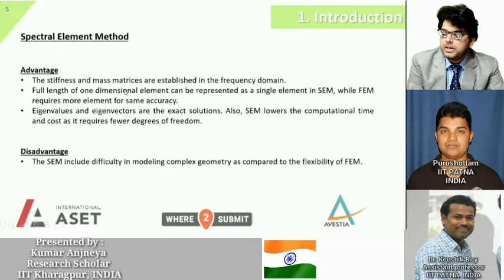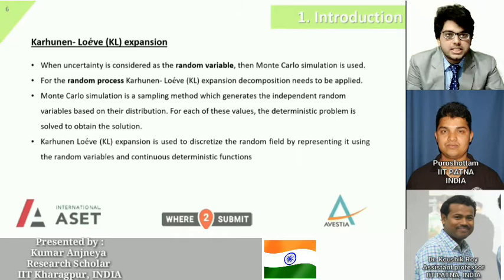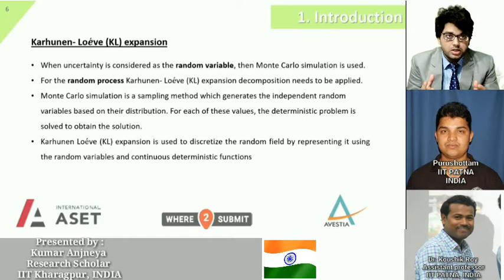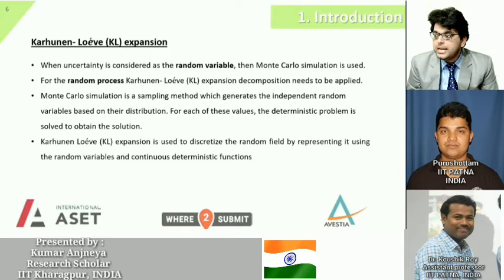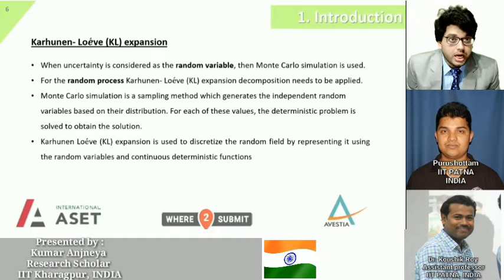One disadvantage of the spectral element approach is that for complicated structures it becomes difficult to model them. Since we are also considering uncertain situations, we use the Karhunen-Loève expansion. If randomness is introduced in a single parameter, Monte Carlo simulation can be used. But when a large number of parameters vary randomly — a random process scenario — the Karhunen-Loève expansion is the appropriate tool to study such systems.